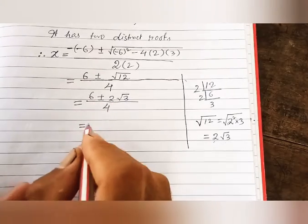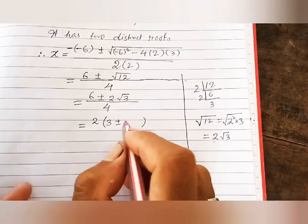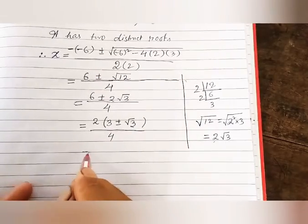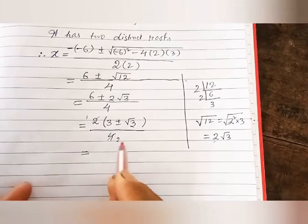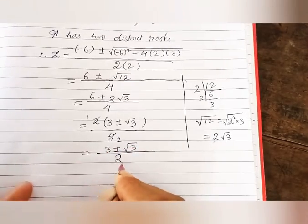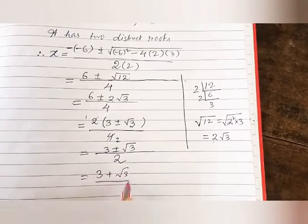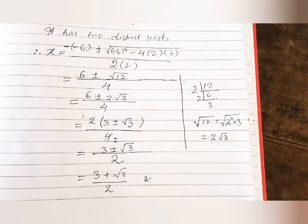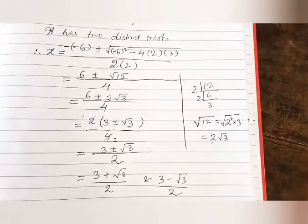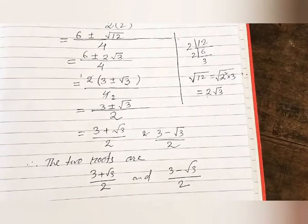Taking 2 as a common factor from the numerator: x = 2(3 ± √3) / 4. Cancelling 2 with 4 gives x = (3 ± √3) / 2. So the two roots are (3 + √3)/2 and (3 - √3)/2. Therefore the two roots are (3 + √3)/2 and (3 - √3)/2. Thank you.